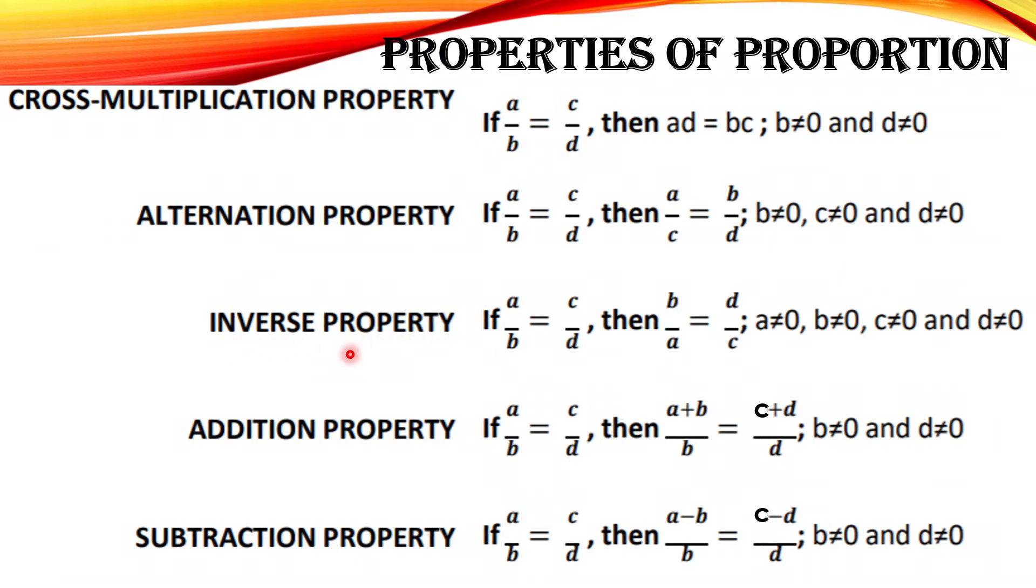We have here inverse property. So from the word inverse, if a is to b is equal to c is to d, then b is to a is equal to d is to c, where a, b, c, and d is not equal to zero. Addition property.